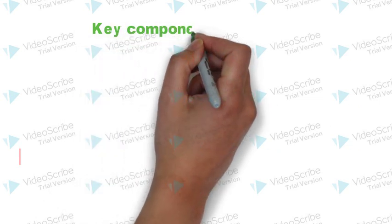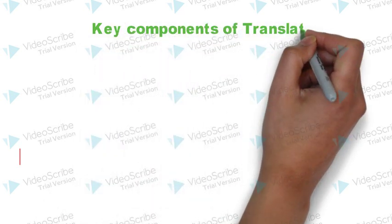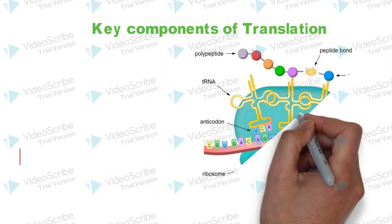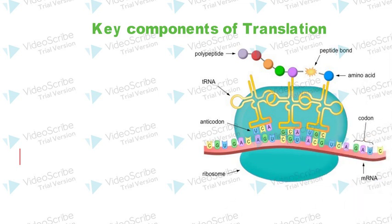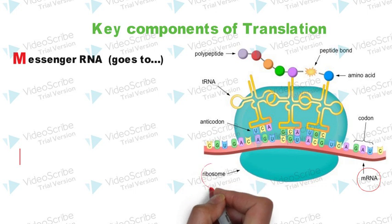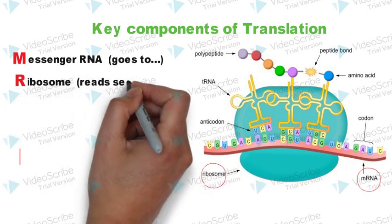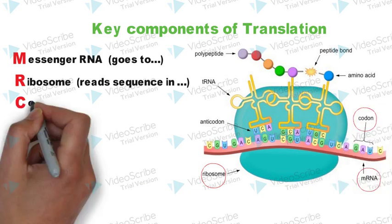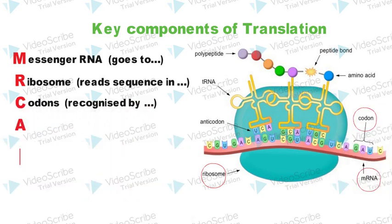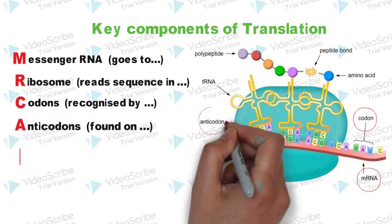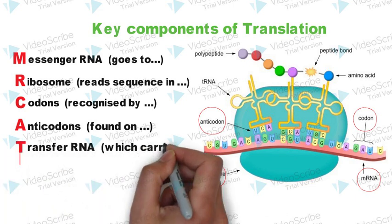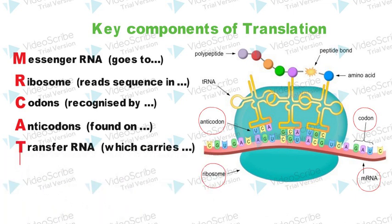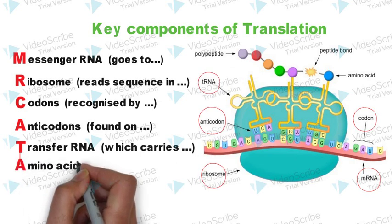First, let's discuss the key steps of translation. In translation, messenger RNA or mRNA goes to the ribosome and reads the sequence in codons, recognized by anti-codons which are found on transfer RNA or tRNA. tRNA carries amino acids which join via peptide bonds to form polypeptides.